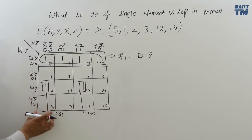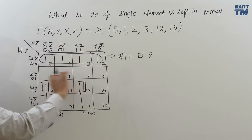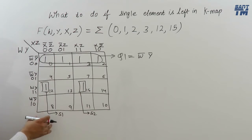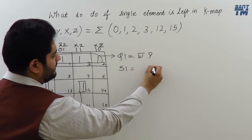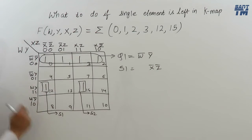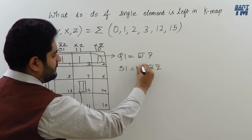So, for this single 1, it is occupying this full column and this full row. For single, we have to take full column and full row. So, in this column, X bar, Z bar will come. For single 1, in the column, X bar, Z bar will come. And in the row, W, Y will come. W, Y.